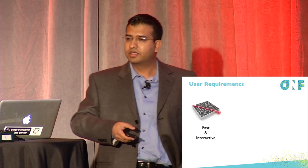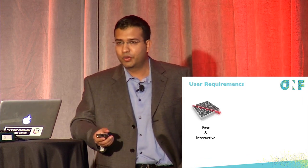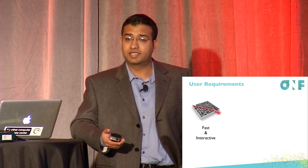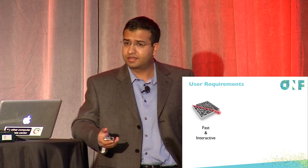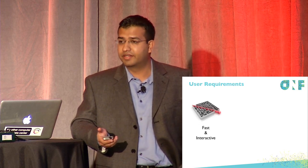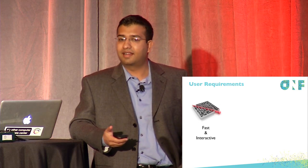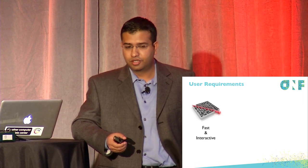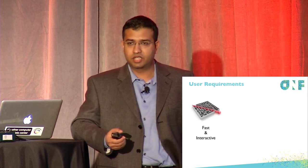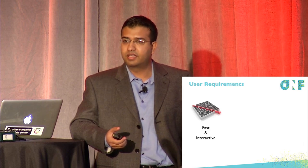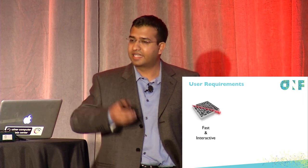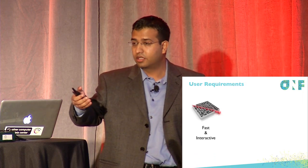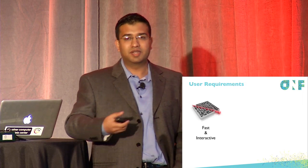First is fast and interactive. Users don't often state this requirement, but we all know what happens if an application or service is not fast and responsive — user engagement is very low and the user experience suffers. At Google we've done experimental studies that highlight this. We artificially introduced delay in Google search results. With a 400 millisecond delay, we saw a 0.6% decrease in the number of queries a user does. When we decreased the latency from 400ms to 200ms, that decrease went from 0.6% to 0.3%. There is a measurable impact.